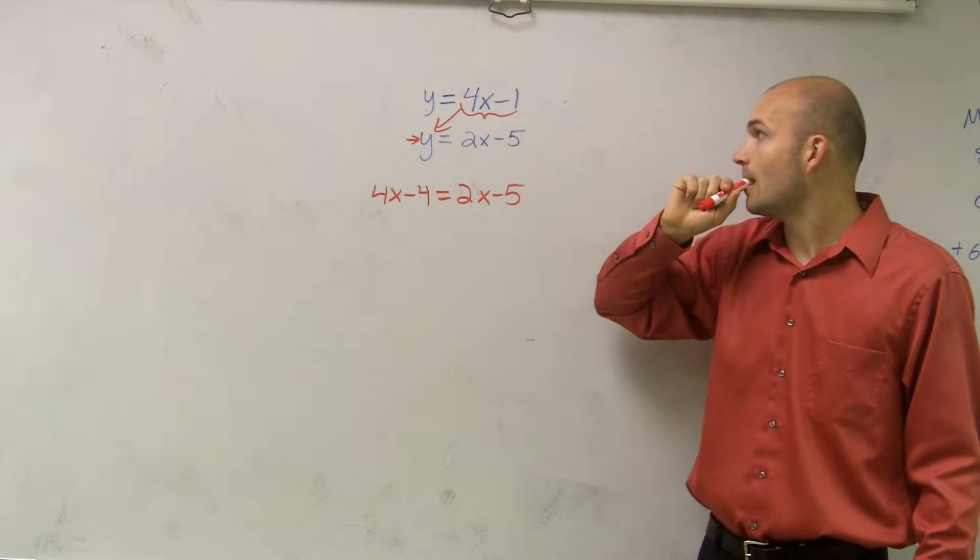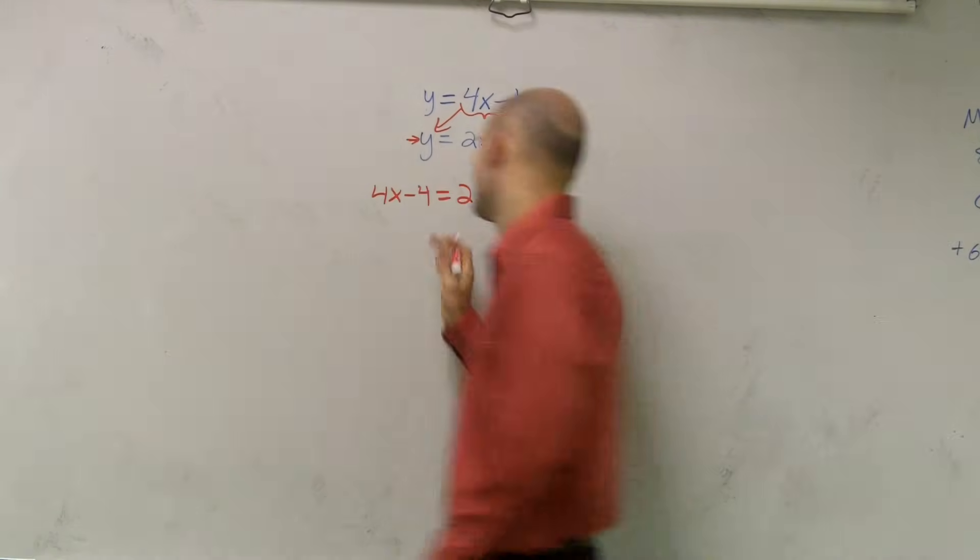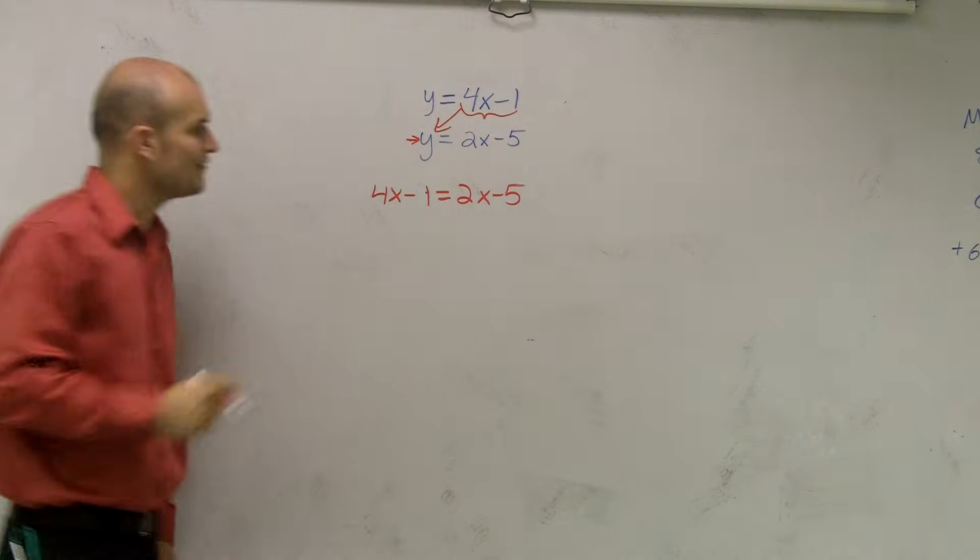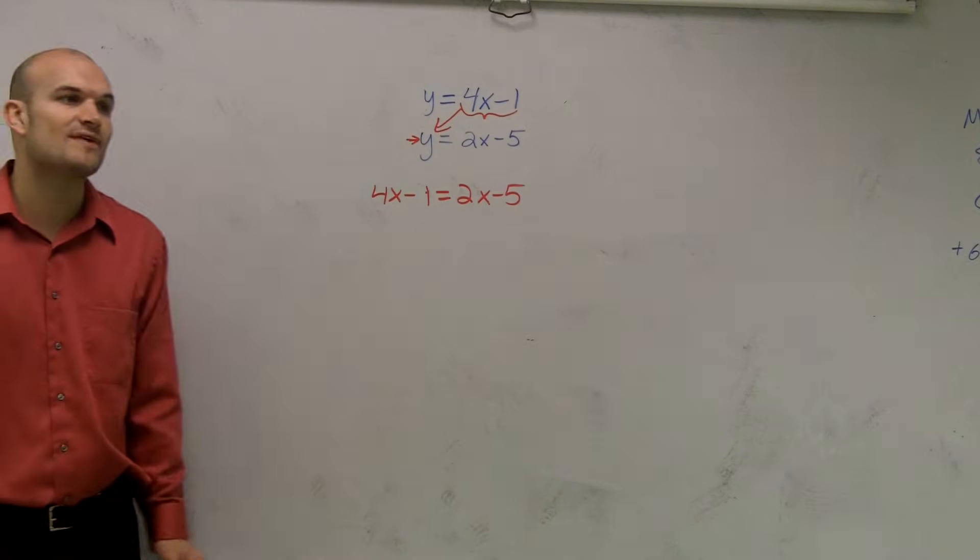It should be 4x minus 1, right? OK. So therefore I have 4x minus 1 equals 3x minus 5.